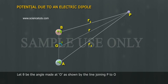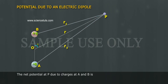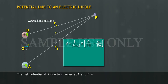Let theta be the angle made at O as shown by the line joining P to O. The net potential at P due to charges at A and B is V equals 1 by 4 pi epsilon naught into Q by PB minus Q by PA.